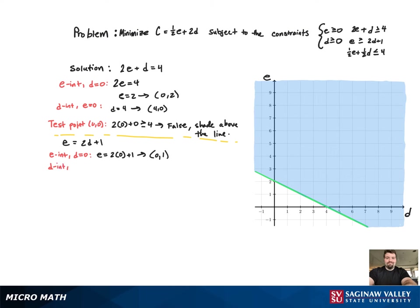And now the d intercept, set e equal to 0. And if we work that out, we'd get d equal to negative 1 half. And now we need to use a test point arbitrarily. Again, we're going to use 0, 0.